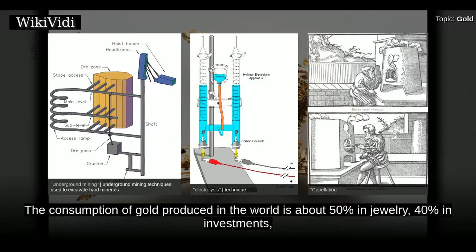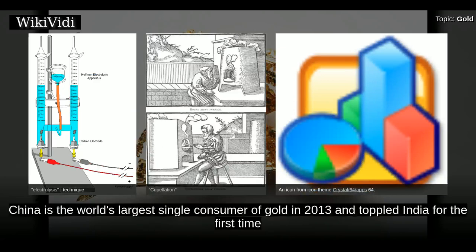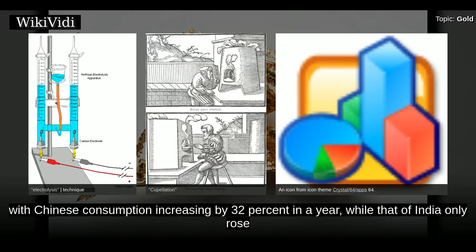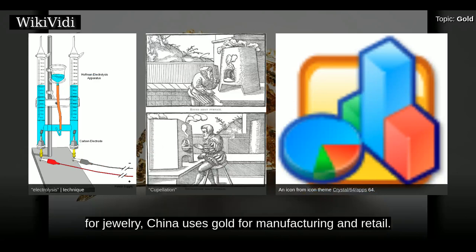The consumption of gold produced in the world is about 50% in jewelry, 40% in investments, and 10% in industry. According to the World Gold Council, China is the world's largest single consumer of gold as of 2013, having overtaken India for the first time, with Chinese consumption increasing by 32% in a year while that of India only rose by 13% and world consumption rose by 21%. Unlike India where gold is mainly used for jewelry, China uses gold for manufacturing and retail.